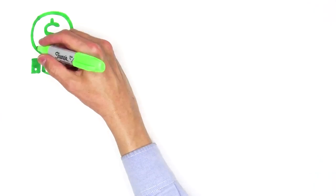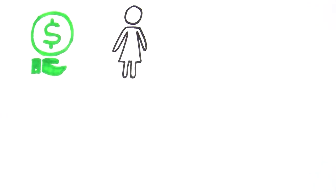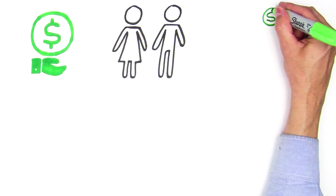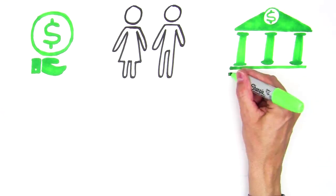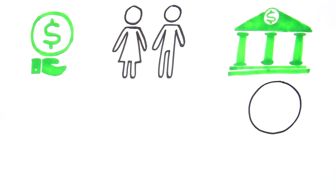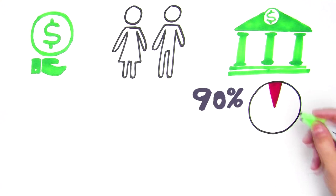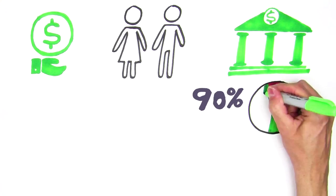The Pell Grant is the foundation of need-based federal financial aid for undergraduate students. Among all federal grant programs, the Pell Grant is by far the largest and constitutes over 90% of all federal grant aid distributed to students.